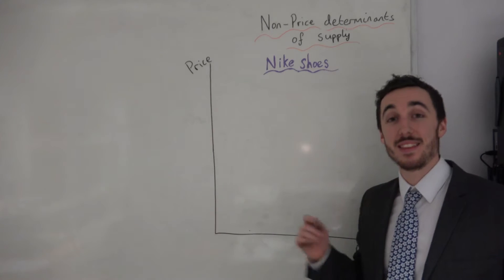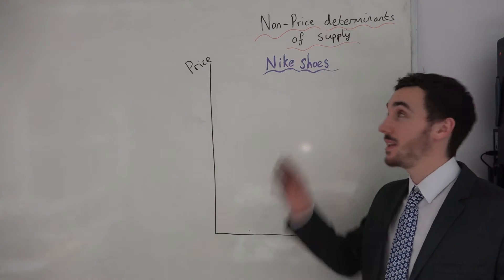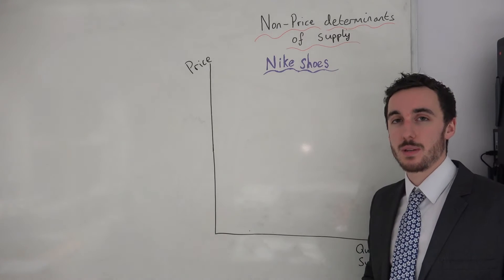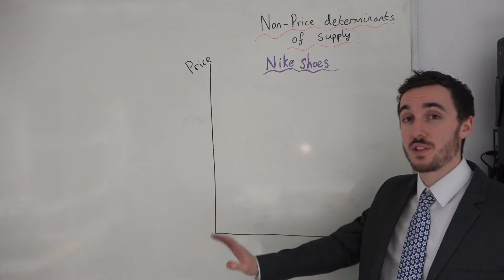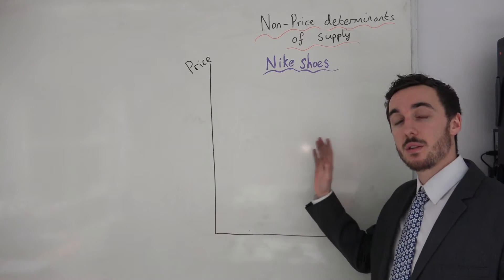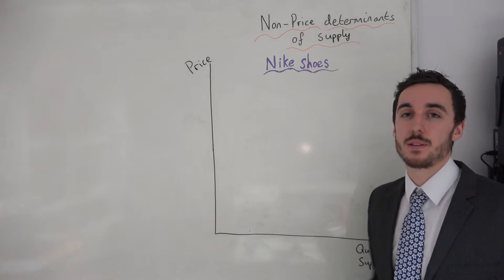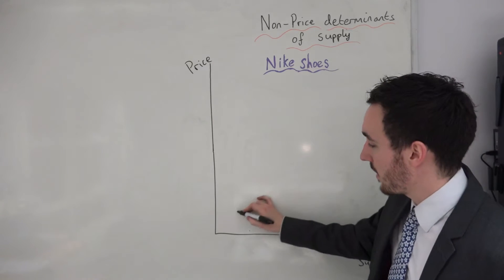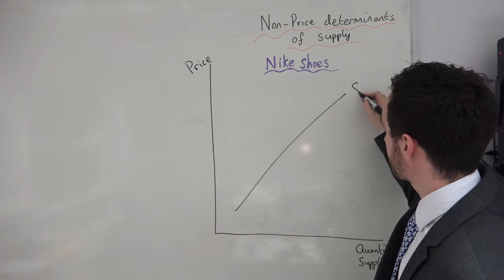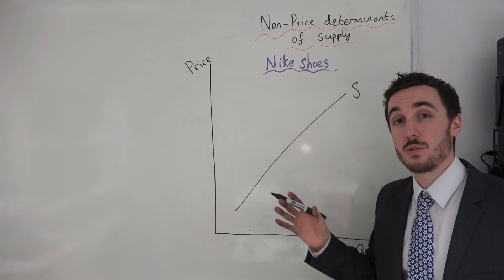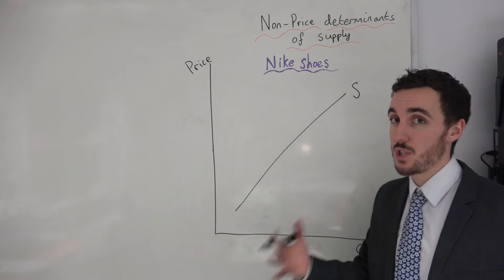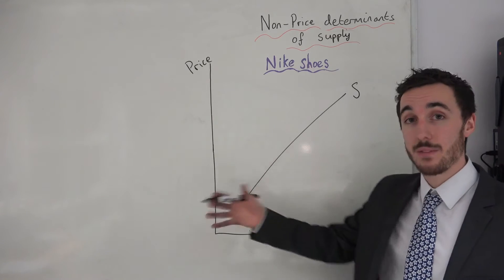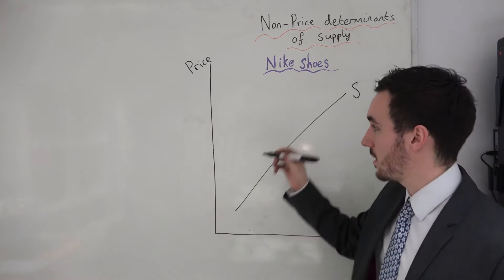Hello, I'm Mr. Burton and in this video we are going to be looking at the non-price determinants of supply. We're going to be looking at the factors which will shift the supply curve to the right or shift it to the left. Hopefully you know from my previous videos that the supply curve is upward sloping and shows us the quantity of goods or services that producers are willing and able to supply at any given price at any given time.